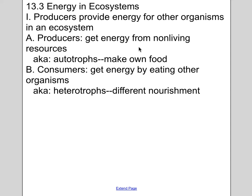Producers provide energy for other organisms in an ecosystem — they get their energy from a non-living resource. One example is a photosynthetic organism, which gets energy from the sun and makes its own food. We also call producers autotrophs — they make their own food. Consumers have to get their energy by eating other organisms; because they can't make their own food, we call them heterotrophs. So producers are typically plants, and consumers include rabbits and humans.